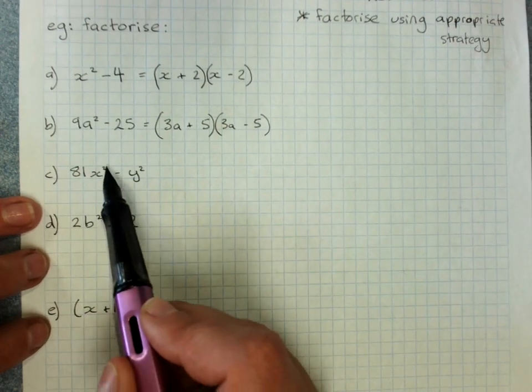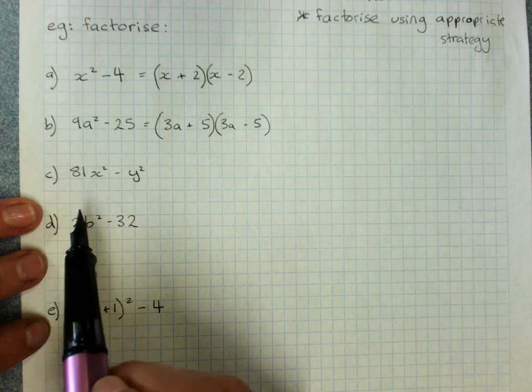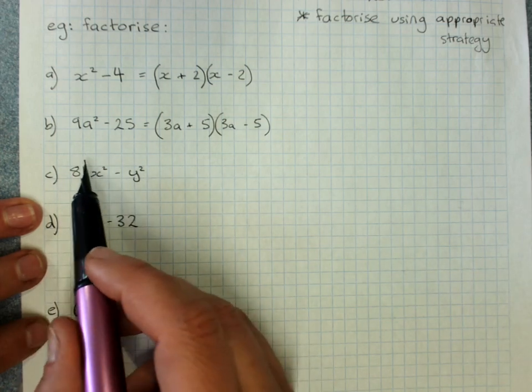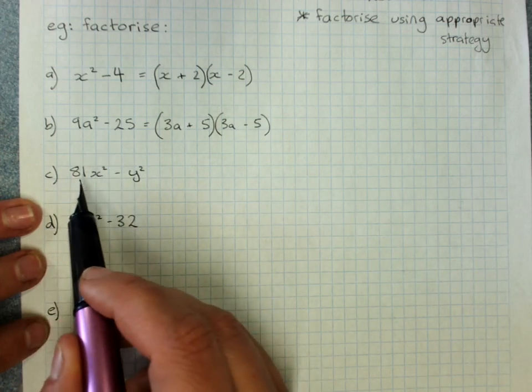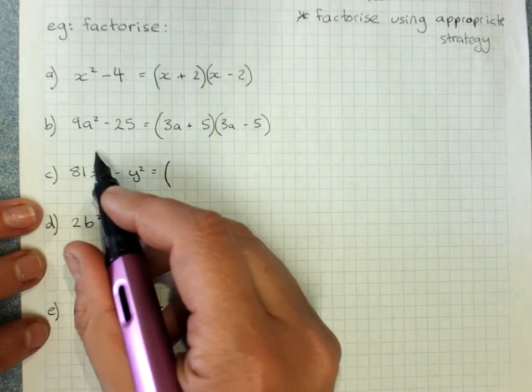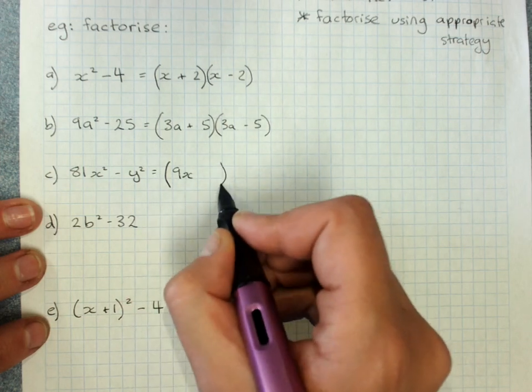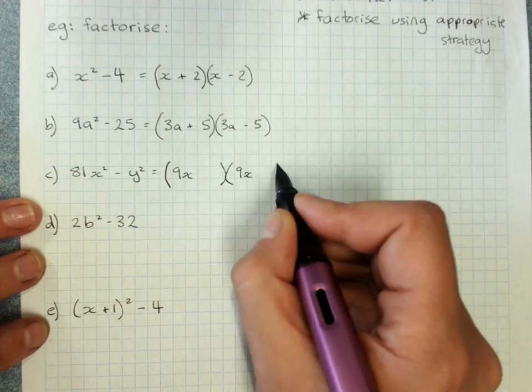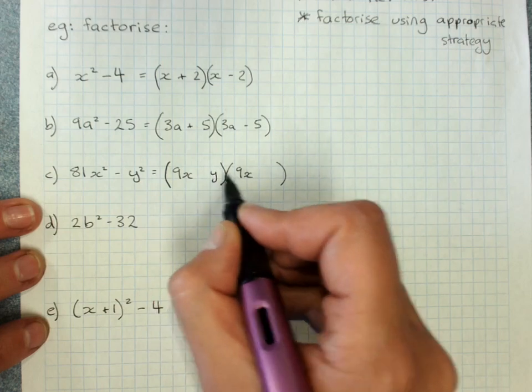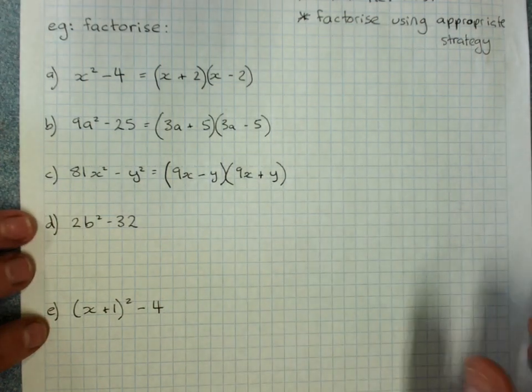Next one. 81x squared minus y squared. Check for a highest common factor. We don't have one. Recognize that 81 is a perfect square, 9 times 9. So the square root of this first term will be 9x. The square root of the second term will be y. Make one negative, make one positive.